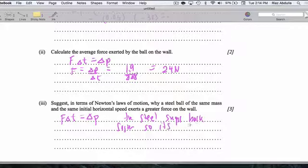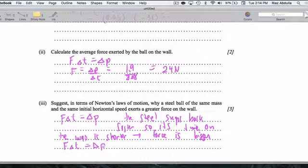So its time on the wall is shorter. That means the force is bigger. So it's like this: F delta T equals delta P. Change in momentum. So what I'm saying is make delta T smaller, and that's going to lead to F being bigger to make sure that the change in momentum stays the same. And again, this is another way of writing Newton's second law.